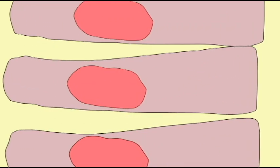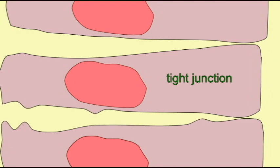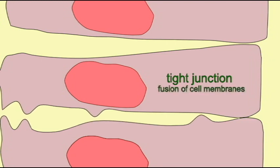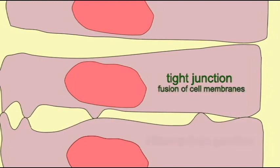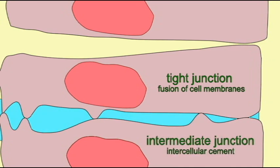There are several types of junctions which you may find between epithelial cells to allow them to hold on to each other better. Tight junctions exist where there is a fusion of the cell membranes. In this type of junction not even water can pass between the cells.